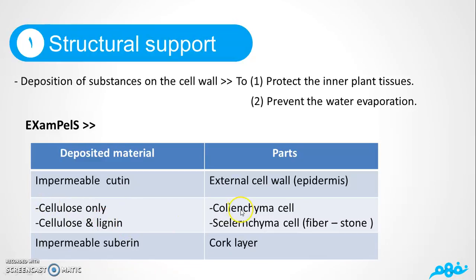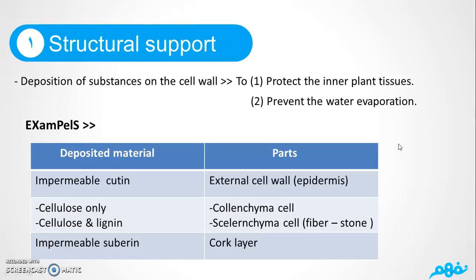Cellulose can be found alone or together with lignin. Cellulose alone is found in collenchyma cells, but cellulose with lignin together is found in sclerenchyma cells. There are two types of sclerenchyma cells: fibers and stone cells. Stone cells have this name because of the large amount of lignin present. This structural support is considered permanent — that's the key phrase to remember.